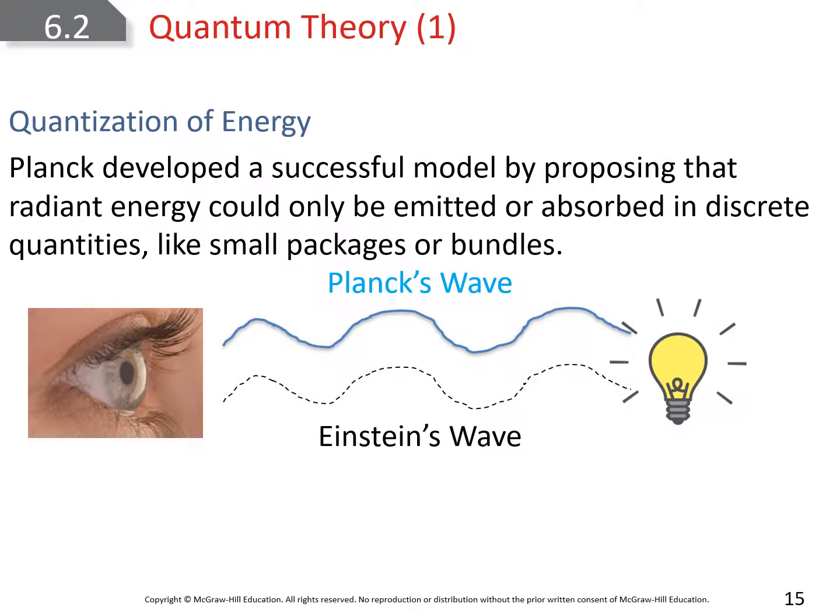When we're talking about quantization or quantized energy, Planck was a scientist who came up with a good model of radiant energy. He was able to prove that it's either emitted or absorbed, but only in discrete quantities like small packages or bundles. What we would normally say is light from a light bulb travels in a wavelength, but actually it's really small bundles or bursts of energy as it travels in that wave pattern. Einstein came up with the idea that these little pockets of bundles were photons.